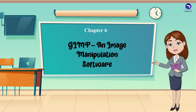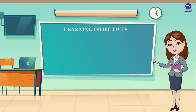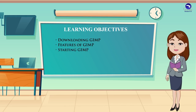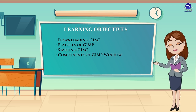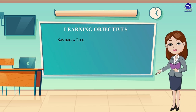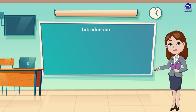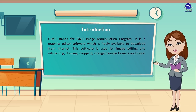Chapter 6: GIMP and Image Manipulation Software. Learning Objectives: Downloading GIMP, Features of GIMP, Starting GIMP, Components of GIMP window, Creating a new file, Opening an image, Saving a file, and Using tools.